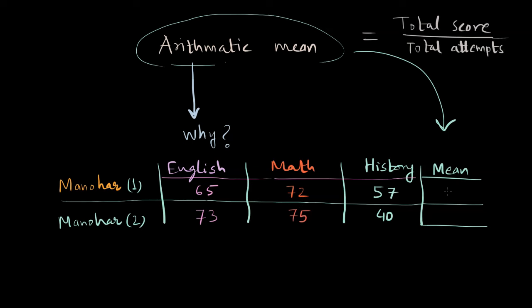For term one, the mean is 65 plus 72 plus 57 divided by 3, and this comes out to be 194 divided by 3 which is 64.67. Manohar scored 64.67 marks on average in each paper.